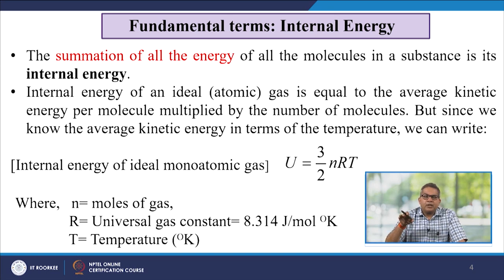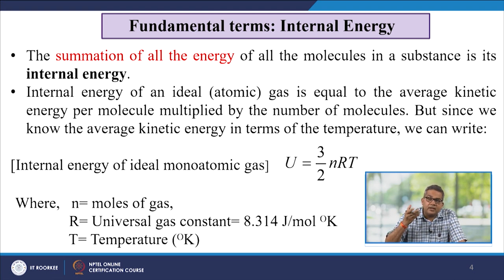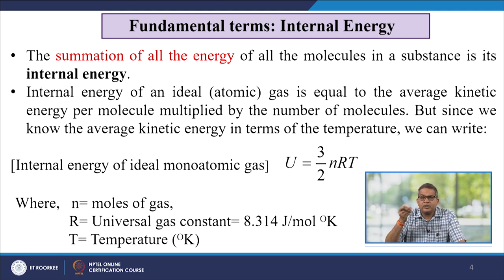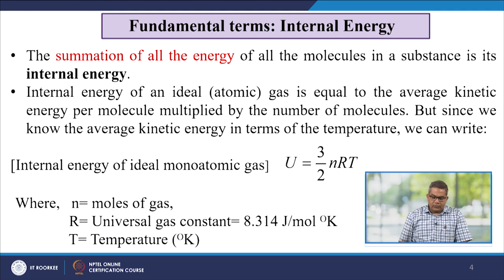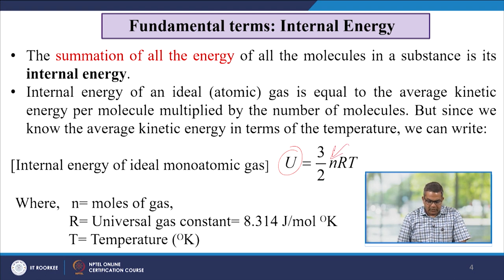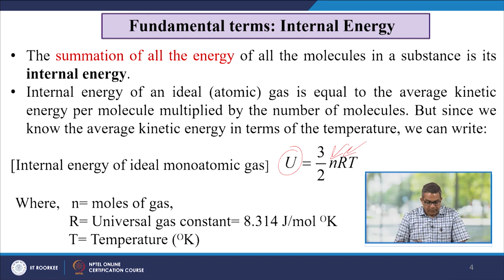The summation of all energy of all molecules in a substance is its internal energy. When you supply heat to any object, some of the energy is consumed to raise the internal energy, and thereafter the molecules are available for work. The internal energy of an ideal monoatomic gas is U = (3/2)nRT, where n is the number of moles, R is the universal gas constant (8.314 J/mol·K), and T is the temperature in Kelvin.